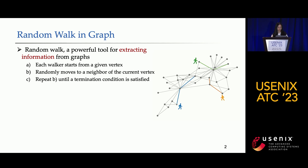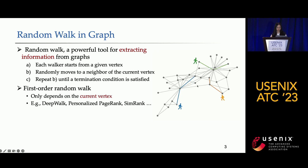So what is random walk? It is a powerful tool for extracting information from graphs. Suppose there are some workers in a graph. Each worker starts from a given vertex and in each step randomly moves to a neighbor of the current vertex, repeating this step until a termination condition is satisfied. The traditional random walk is based on the first-order Markov model, which assumes the transition probability only depends on the current vertex and is independent of the previous information.